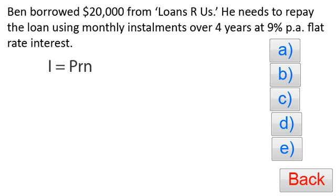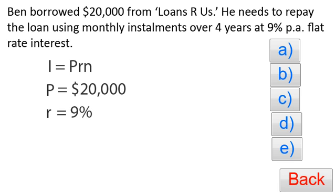Before we attempt the questions, let's write down some key points. Flat rate interest means simple interest, so our formula is I equals PRN. P is the principal — the amount borrowed — which is $20,000. R is the interest rate, nine percent per annum. Since we're working in monthly installments, we divide nine by twelve to get 0.75 percent per month.